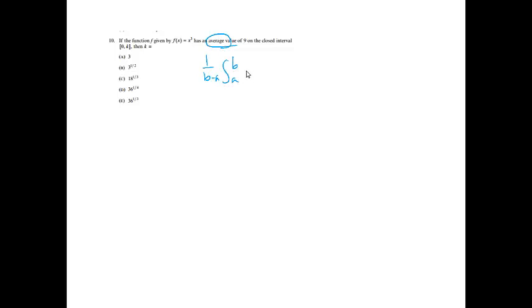Number 10: if f(x) = x³ has an average value of 9 on the closed interval [0, k], then k equals what? The average value formula is 1 over (b minus a) times the integral from a to b of the function. The integral goes from 0 to k, so it's 1 over k times the integral from 0 to k of x³, and this must equal 9.